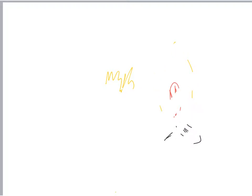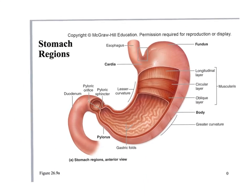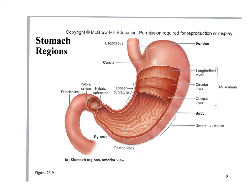Today we're going to talk about the stomach. We covered most of the upper gastrointestinal tract on Wednesday — the oral cavity, the esophagus, the structure of the esophagus, and so on. Now, as we consume food, the next structure we run into after the esophagus is the stomach.